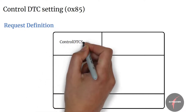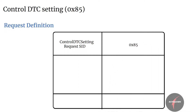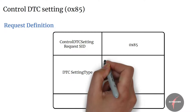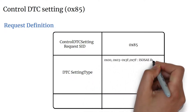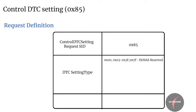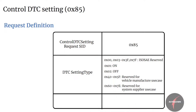With this understanding, let's dive into the request definition of the service. Firstly, we have the Control DTC Setting request SID which maps to value 85, followed by the sub-function parameter DTC setting type. The value 03 to 3F and 7F are ISO SAE reserved. Value 01 maps to on, where the server shall resume the updating of DTC status bits according to normal operating conditions. Value 02 maps to off, where the server shall stop the updating of DTC status bits. Value range 40 to 5F is reserved for vehicle manufacturer specific use cases, and value range 60 to 7E is reserved for system supplier specific use cases.